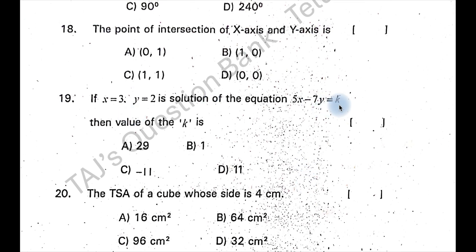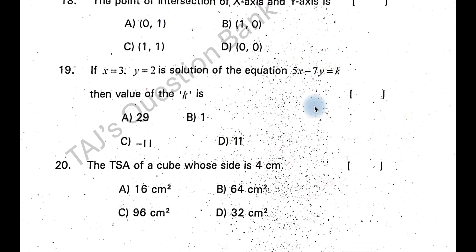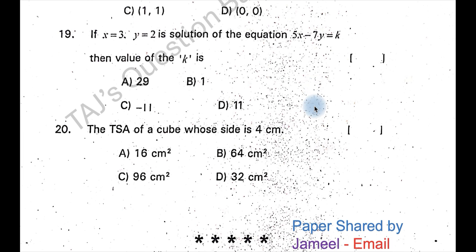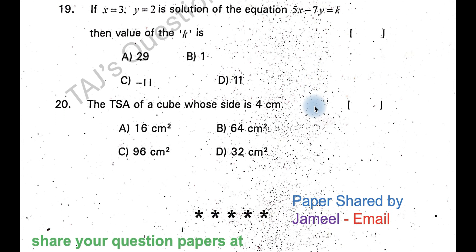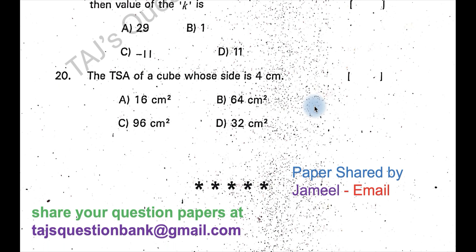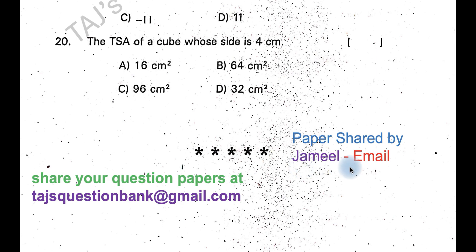19th, k will be 1. 5 threes are 15 minus 7, twos are 14, it is 1. For 20 the answer is 6 a square, 6 into 16 is 96 centimeter square, option C is the right answer. Thank you Jameel for sharing this paper. You can also share your papers at the mail ID thoughtsquestionbank@gmail.com. Let's meet you in another video. Until then, bye.